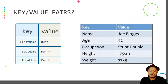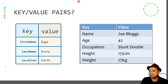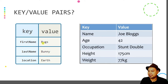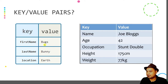Because Preferences works on key-value pairs, let's look at what key-value pairs are. Key-value pairs work by having a key and then a value assigned to that key. It's similar to the properties panel in a typical IDE, where each property has a name (the key) and a corresponding value.